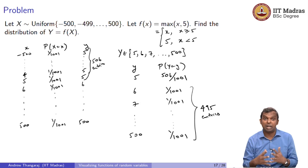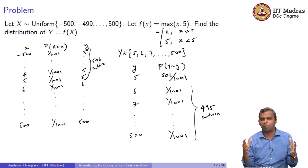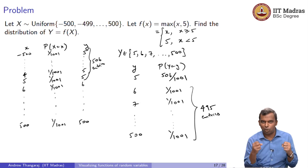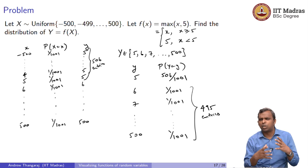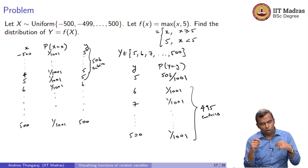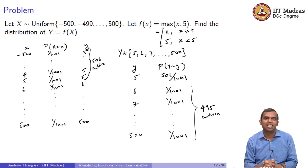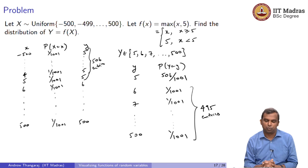Whatever the size of the problem may be, if you have one discrete random variable taking values and one function, you can always make the table work using dot-dot-dot notation. Identify the pattern and it will work for you. Thank you.